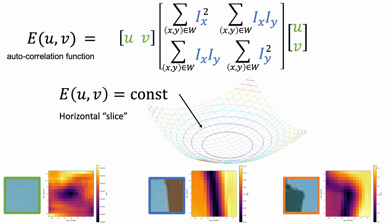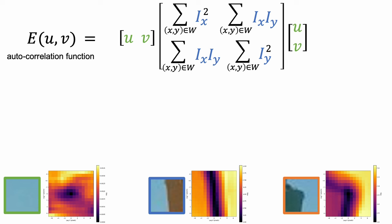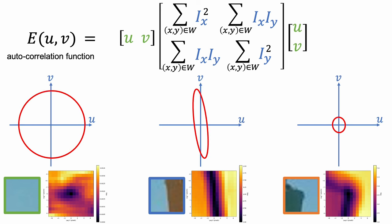One way to understand the quadratic equation is to visualize the shape of the horizontal slices. For smooth regions, we see a large circular shape because the error goes out very slowly. For edges, we see an elongated ellipsoid along the edge direction. For corners, we see a small circle because the error goes up very rapidly for all possible displacement vectors.